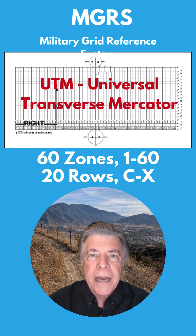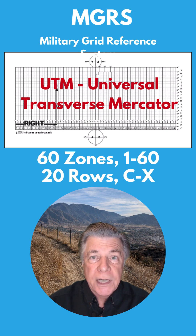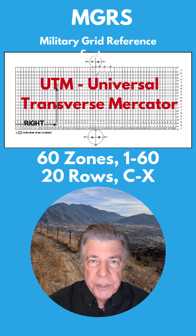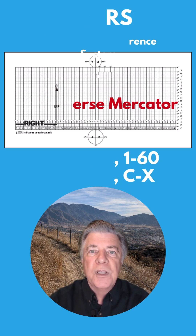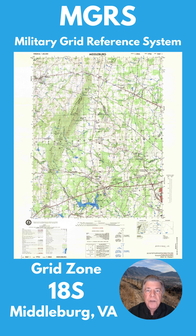Any area can now be identified by giving the zone and row in which it lies. For example, Middleburg, Virginia lies in Zone 18 and Row S, or in grid zone designation 18S. You can find the grid zone designation in the map legend.